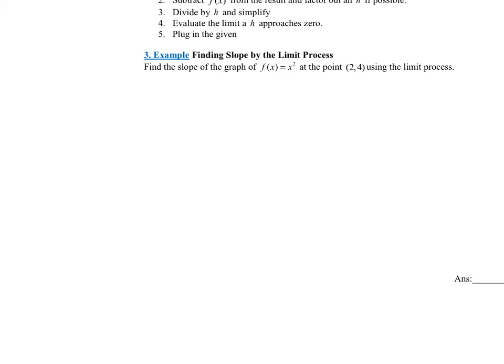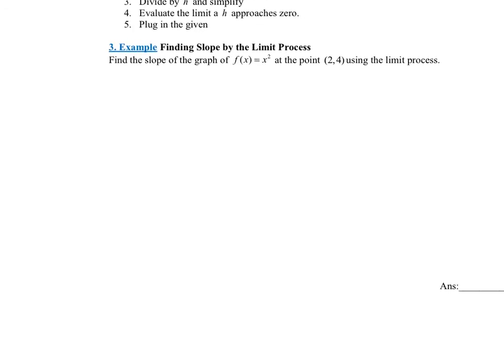Here it says: find the slope of the graph of f(x) = x² at the point (2, 4) using the limit process. This is really interesting because finding the slope of a graph should be easy — M equals (y₂ − y₁)/(x₂ − x₁), just change in Y over change in X. But the problem is we're not finding the slope between two points; we're finding the slope at one single point. Our technique is to find the slope through two points and then bring those points infinitely close together — the slope of the tangent line. So we need to find the limit as H approaches 0 of f(x+h) minus f(x) all over H, at x = 2.